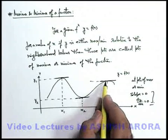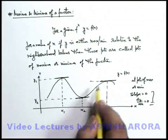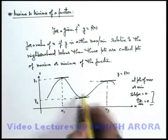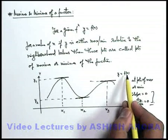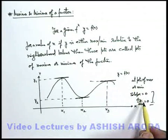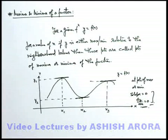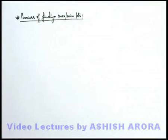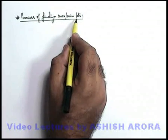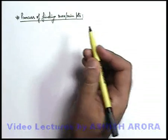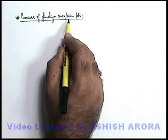So for any point of the curve, if the curve is having either a maximum value or a minimum value, we can simply state that at those points the differentiation of the function with respect to its independent variable will be equal to zero. Always remember this.